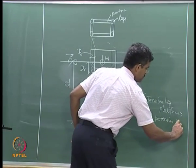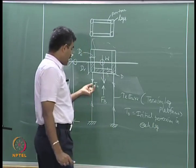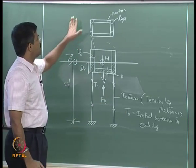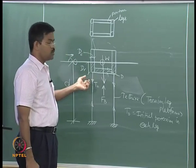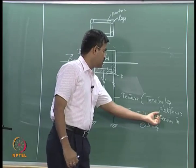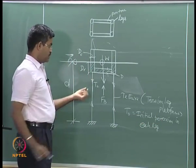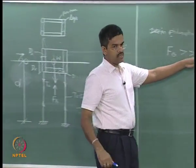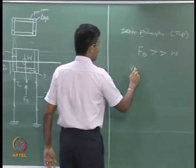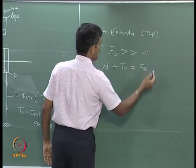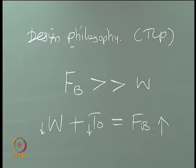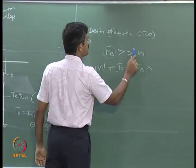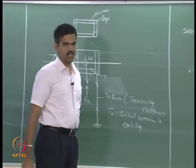Each leg will have a couple of tethers — maybe 4, 6, or 8 pairs — so T₀ is the initial pretension per leg. The total T₀ for the whole platform will be 4T₀. Conceptually, the buoyancy force is much larger than the weight, so we have this equation of static equilibrium: W plus T₀ equals F_b, because F_b acts upward while W and T₀ act downward. The compensation of F_b versus W is taken care of by T₀. That is the concept.